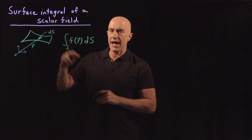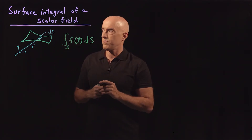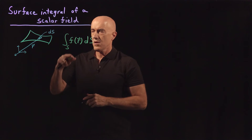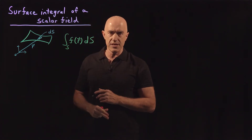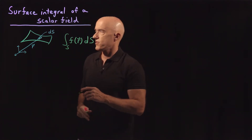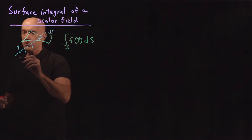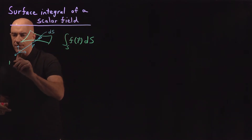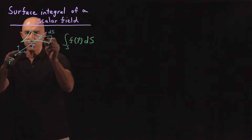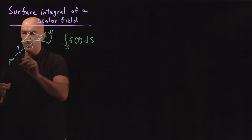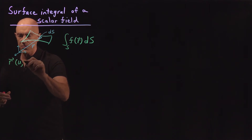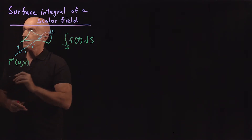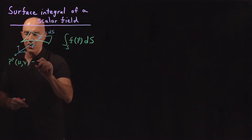So how do we actually compute such an integral? We have to do a parameterization of the surface. To parameterize a surface, we'll parameterize it by parameterization of R. We need two variables, which I'll call u and v, to parameterize.